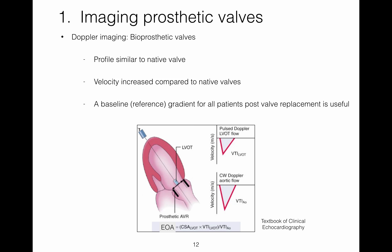Regarding Doppler imaging of bioprosthetic valves: bioprosthetic valves have a Doppler profile similar to a native valve, however the flow velocity is normally increased compared to a native valve. As with mechanical valves, a baseline measurement for all patients post valve replacement is very useful as it can serve as a valve fingerprint for future examinations. As with mechanical valves, the effective orifice area for a bioprosthetic aortic valve is calculated using the continuity equation, in the same way as the aortic valve area for a native valve.